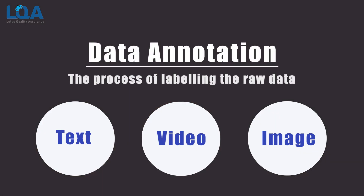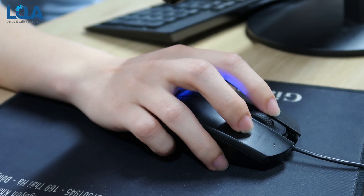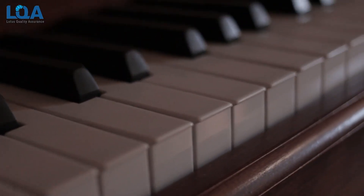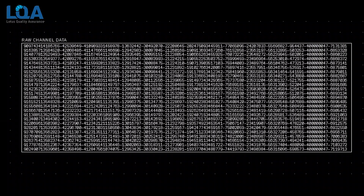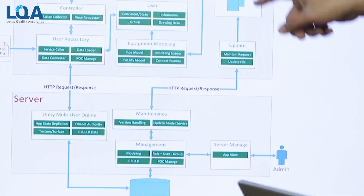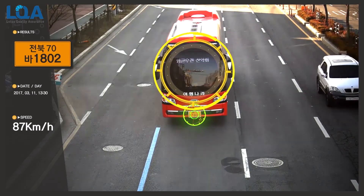Data annotation is the process of labeling the raw data available in various formats like text, video, or image. At the beginning of the process, this data is without structure or order and therefore incomprehensible to machines. Without humans labeling what is in a picture, how to recognize music, or how to read text in different languages, data is simply noise. Through annotation, this noise can be turned into a focused training manner so that the machine can easily and clearly understand the input patterns.